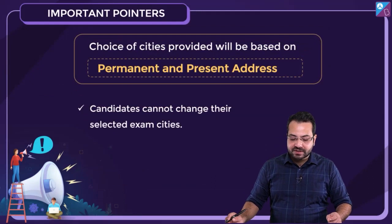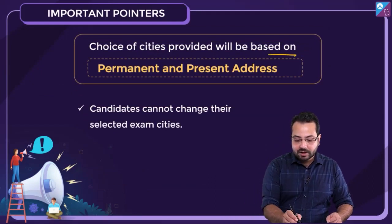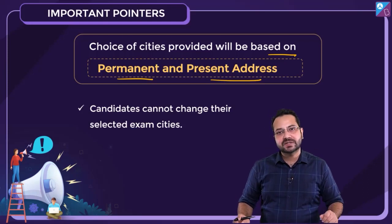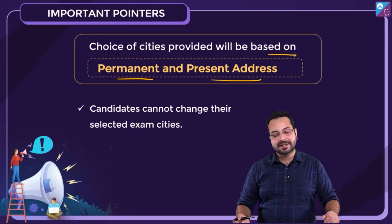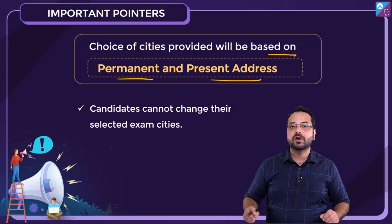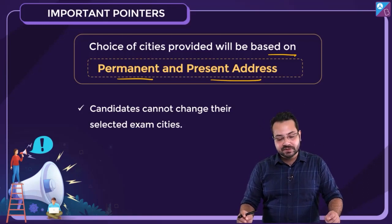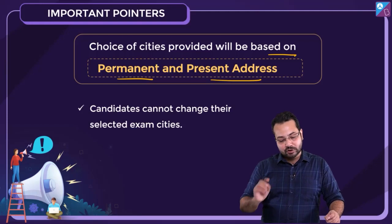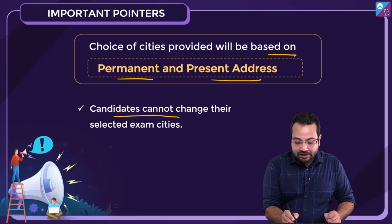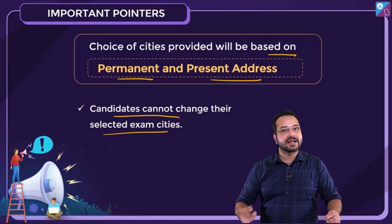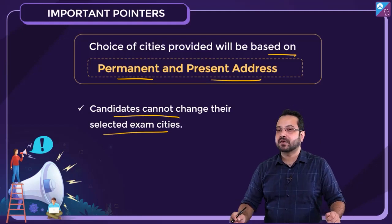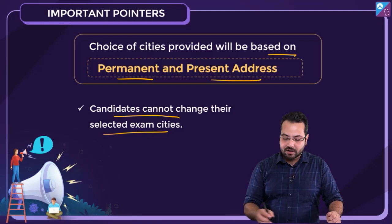The choice of cities will be provided based on the present and permanent address. When you are filling your present and permanent address, make sure it is correct — make sure it is the place where you want to take the exam, because your allotment of city is going to be as per that. Candidates cannot change their selected exam city, so make sure you are filling in the right addresses.